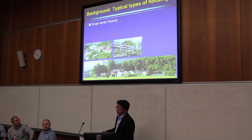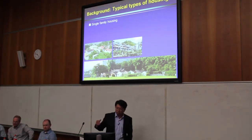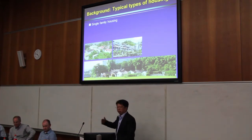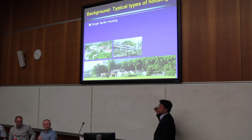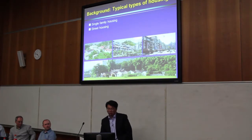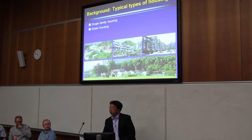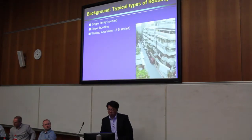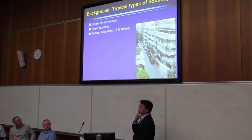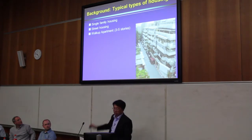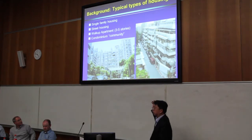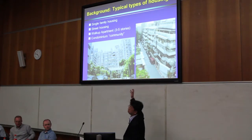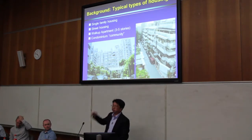Because we are talking about housing reconstruction, I will give you some very typical types of housing. The first type is single family housing, usually in the rural area. We also have street housing in the town or urban area. In the urban area we have what we call walk-up apartments, from three to five stories with no elevator. And there are also condominium communities with elevators and probably more than ten stories.